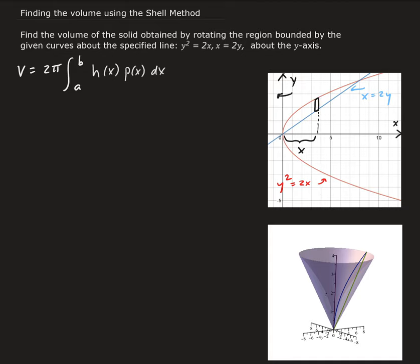The height is the difference between the two curves. Since we want this in terms of x, one curve is y equals square root of 2x, and the other is y equals one-half x. So the height h(x) equals square root of 2x minus one-half x.